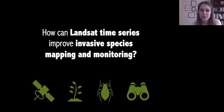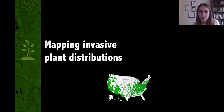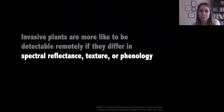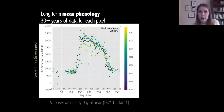Now that we have access to Landsat time series, the question becomes: how can we use this robust record of the land surface to improve invasive species mapping and monitoring? Remote sensing data sets are really well suited for mapping the large-scale distributions of any species, including invasive plants. They provide continuous spatial coverage and are able to capture relatively fine-scale variability. In most situations, invasive plants are likely to be detectable if they differ in their spectral reflectance, texture, or phenology relative to the native vegetation in an area. For a lot of our work, we've been focusing on this phenology element. The temporal repeat time of Landsat is 16 days — 8 days with two sensors.